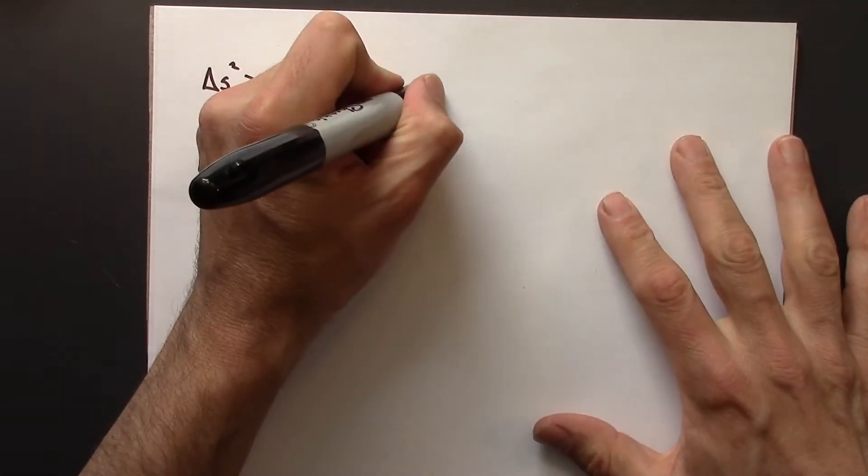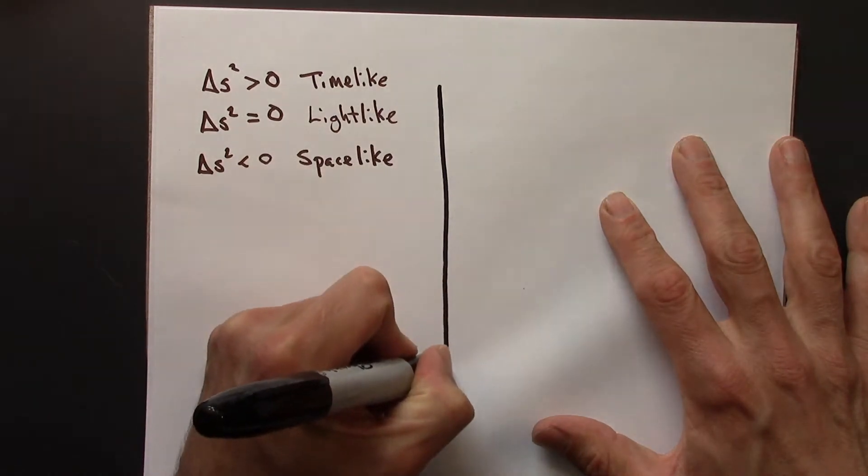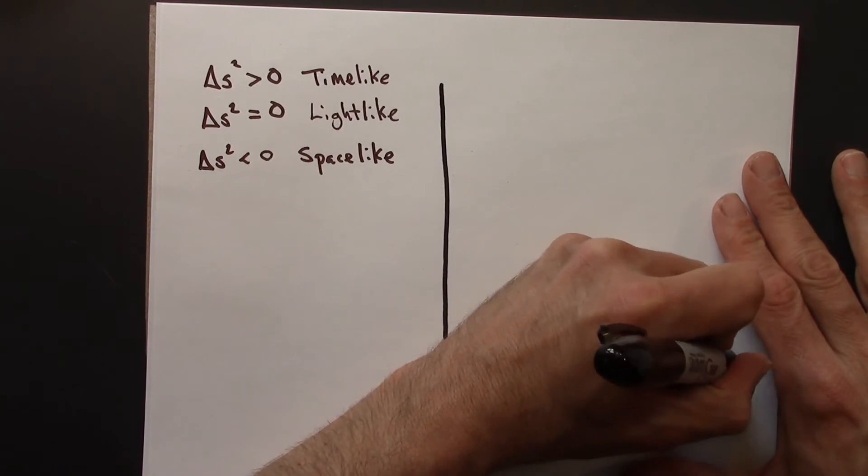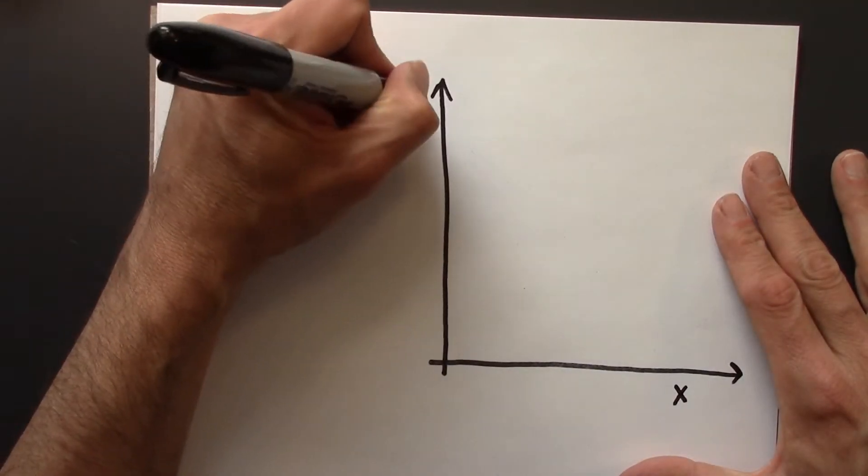So let's say we have a space-time diagram. So this is X, and there's time.